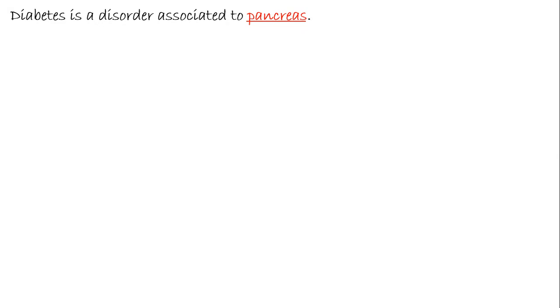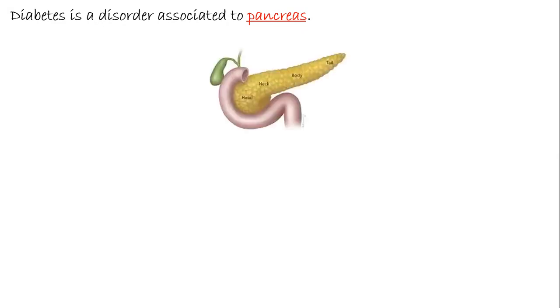To improve our knowledge, we are going to look at diabetes in detail. Diabetes is a disorder associated with the pancreas. Histologically, the pancreas is divided into two types: the exocrine part and the endocrine part. Here you can see the structure of the pancreas.